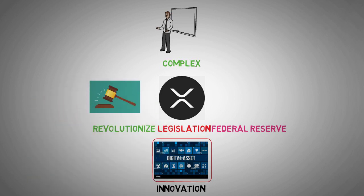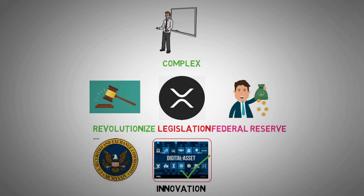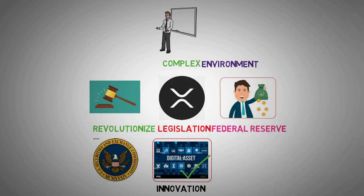Moreover, the bill aims to draw a clear distinction between digital assets and legal tender. This differentiation is crucial as it can empower investors, businesses, and ordinary users to navigate the complexities of digital assets with greater confidence. Additionally, by delineating the jurisdictional boundaries between the Securities and Exchange Commission (SEC) and the Commodity Futures Trading Commission (CFTC), the bill offers regulatory clarity that could reshape the landscape for digital assets, prioritizing protection against fraud and manipulation.